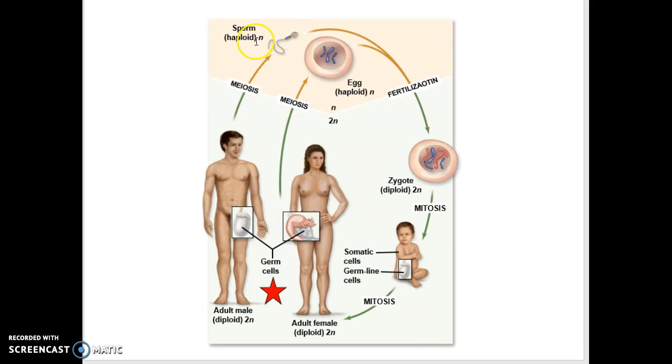Sperm, which are haploid, combine with an egg, which is haploid, during the process of fertilization. So one sperm and one egg is normal reproduction.